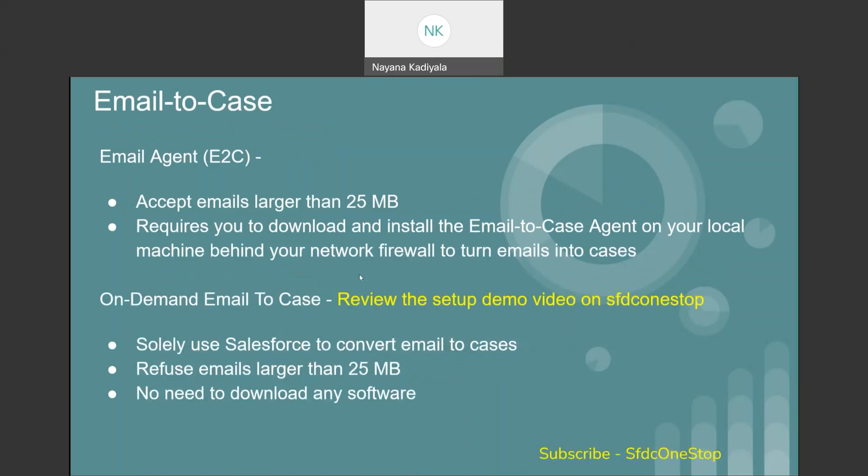Email-to-case can be set up in two ways. The first is by downloading and installing the email-to-case agent on the local machine behind your network firewall, which accepts emails larger than 25 MB. For today's video, we'll focus on the second way: on-demand email-to-case. Unlike the first option, you don't need to download any software — it solely uses Salesforce to convert emails to cases, but it refuses emails larger than 25 MB.